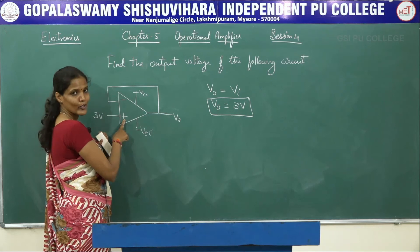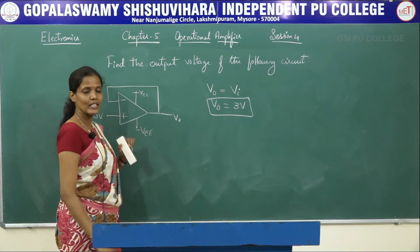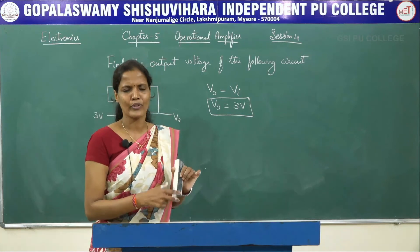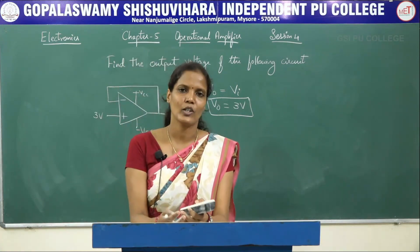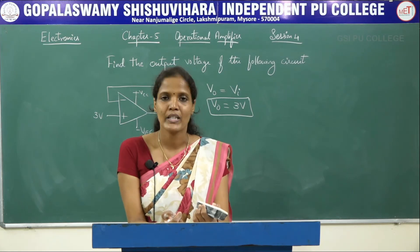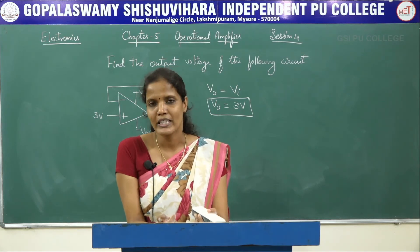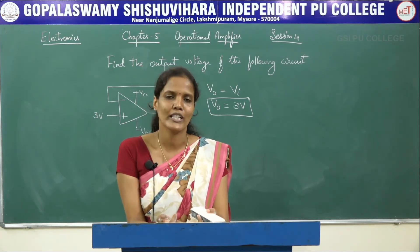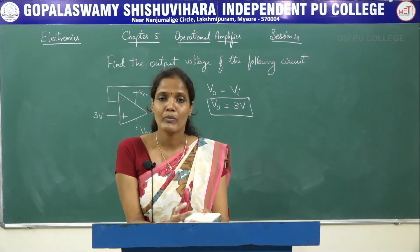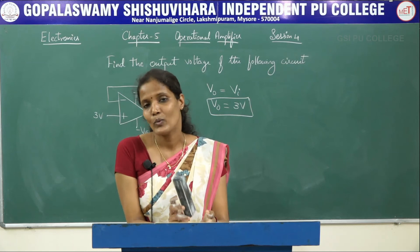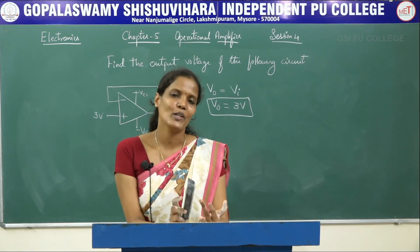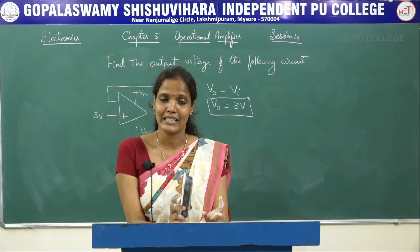This itself is the answer. When Rf value is not given and the input signal is applied to the non-inverting input terminal of the op-amp, that circuit is a voltage follower. So these are three different problems for three different topics: inverting operational amplifier, non-inverting operational amplifier, and voltage follower. All problems are very simple — remember the formula and identify which type of operational amplifier the circuit is.